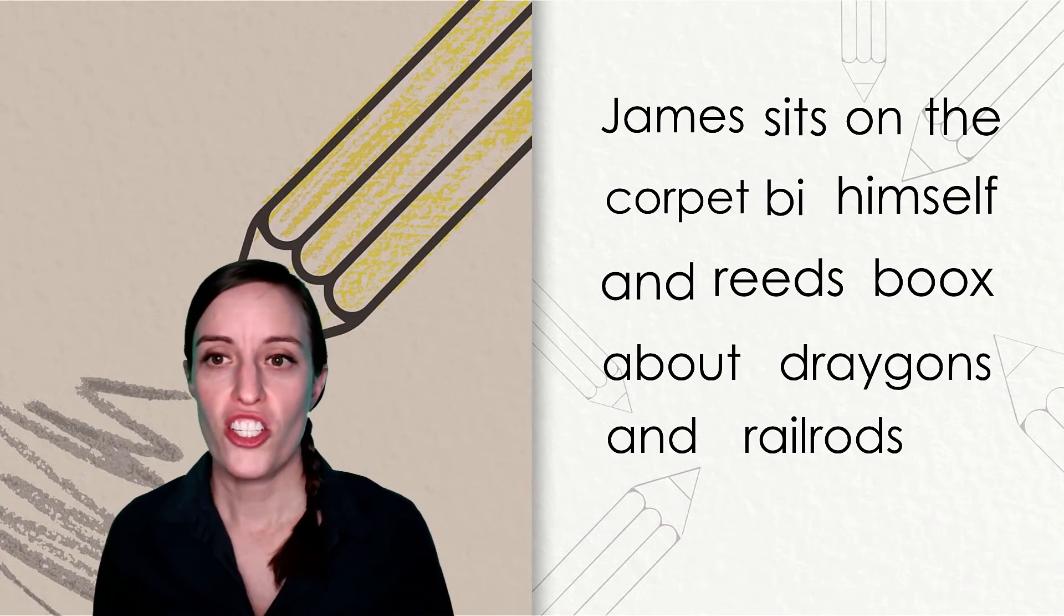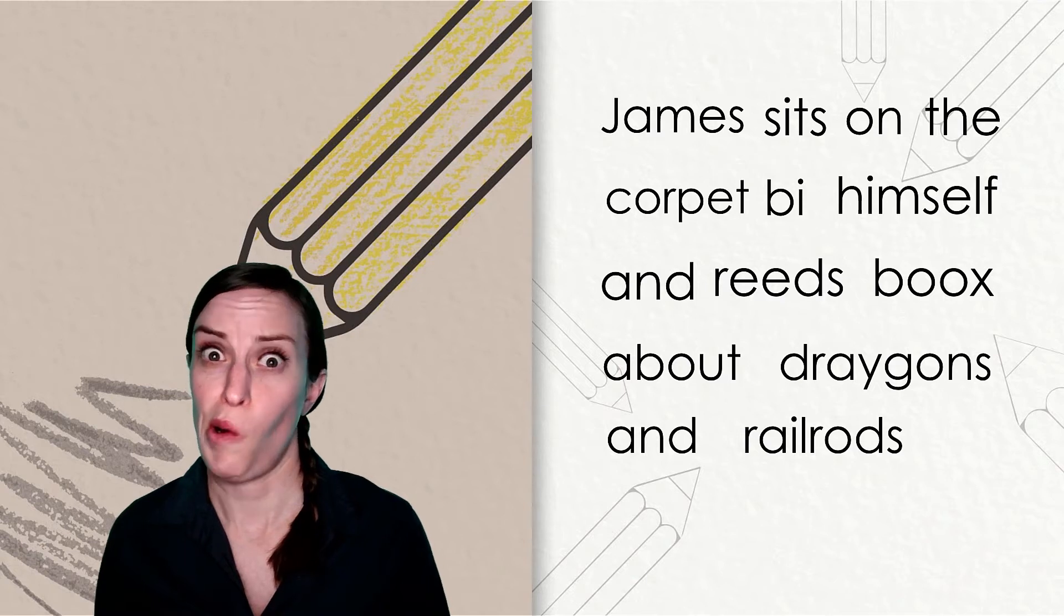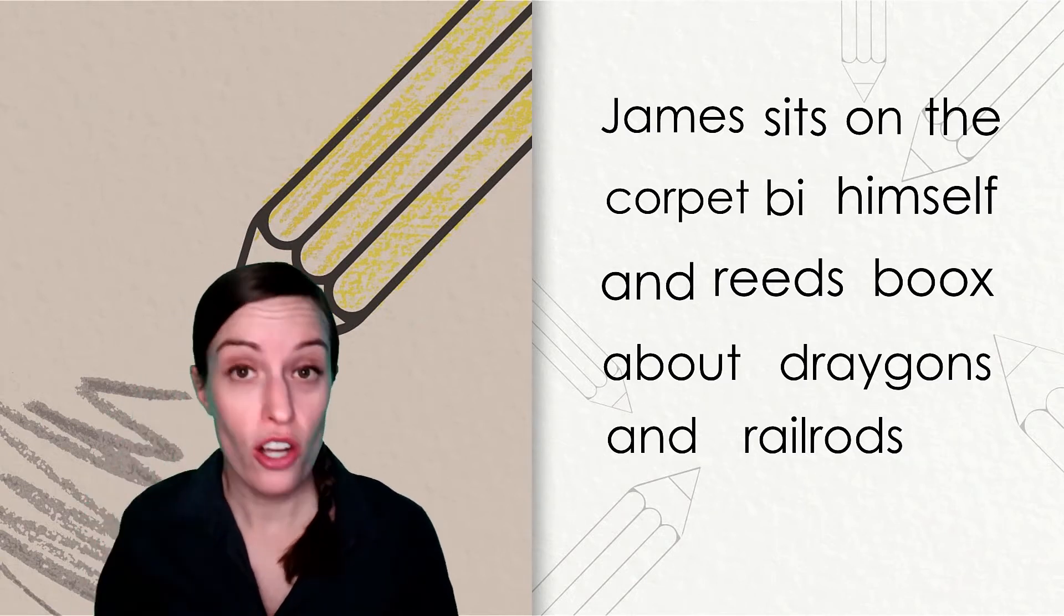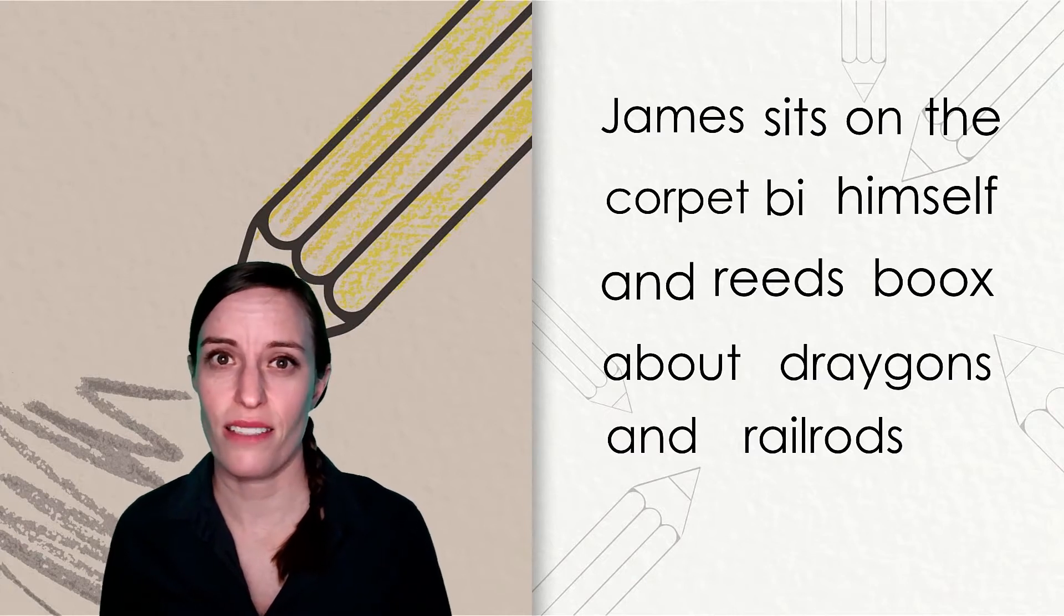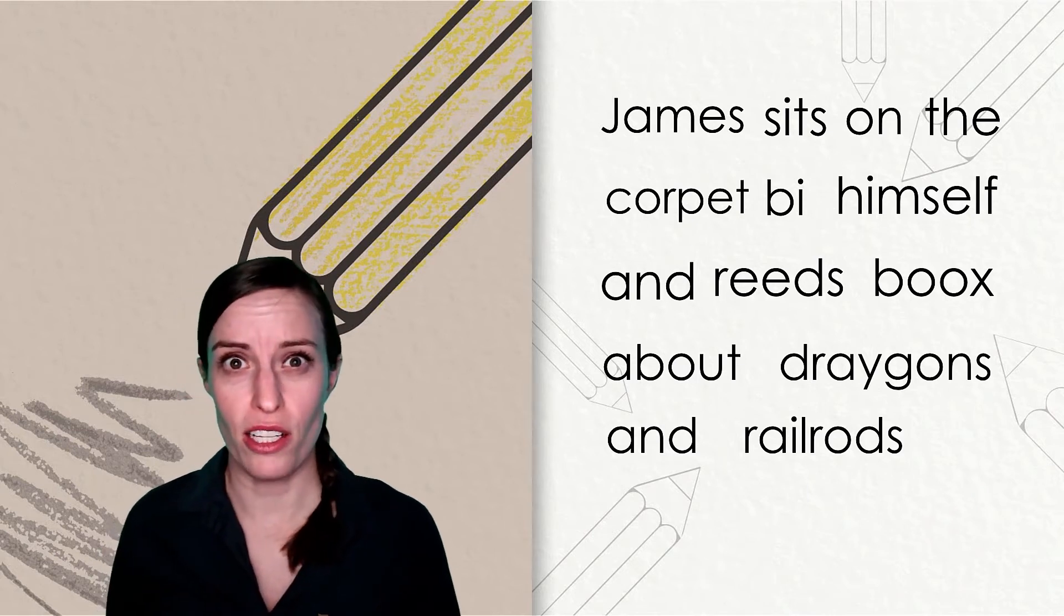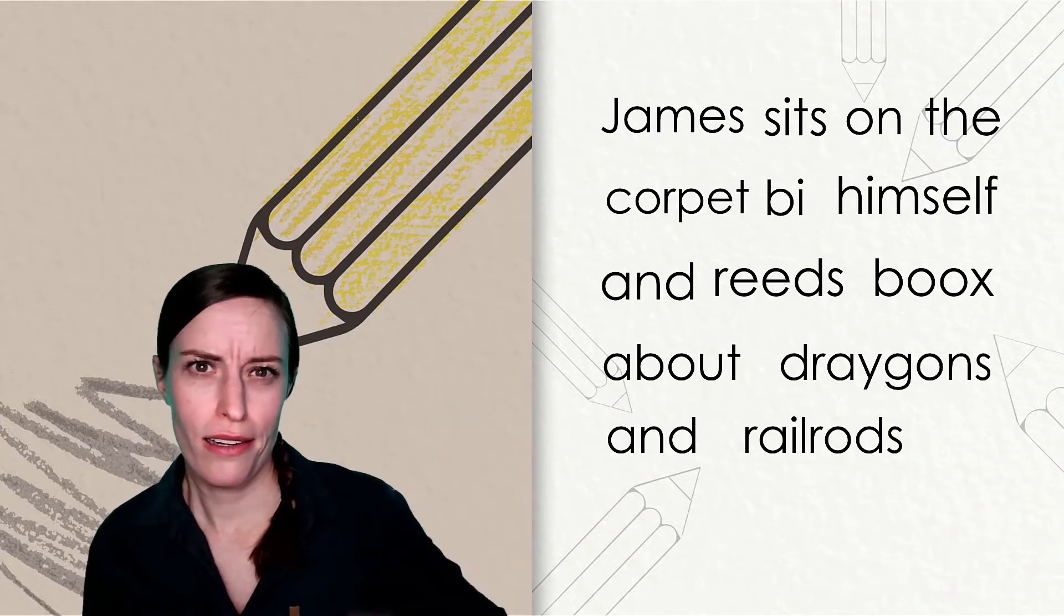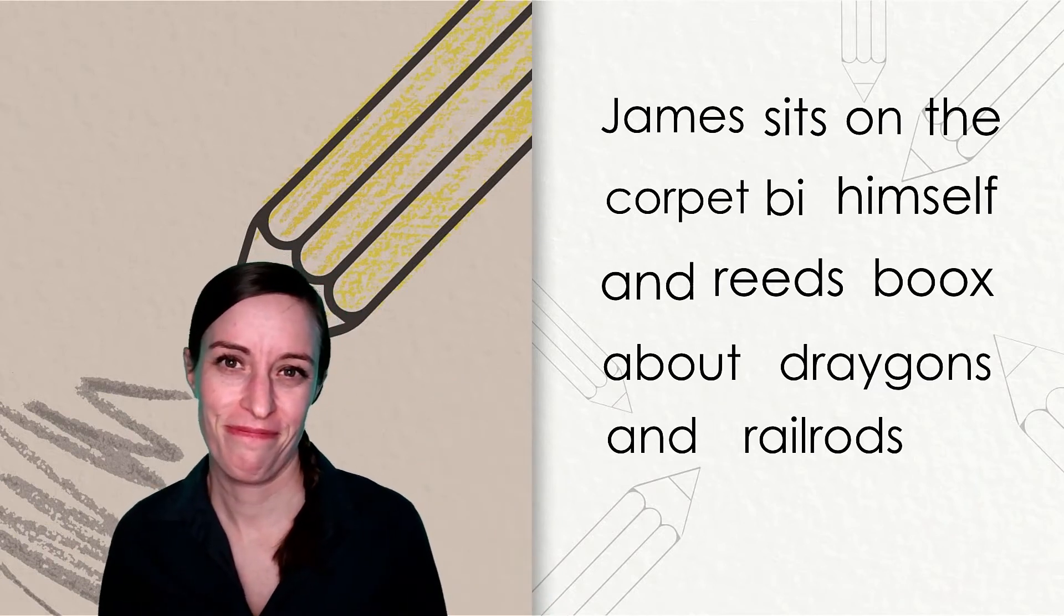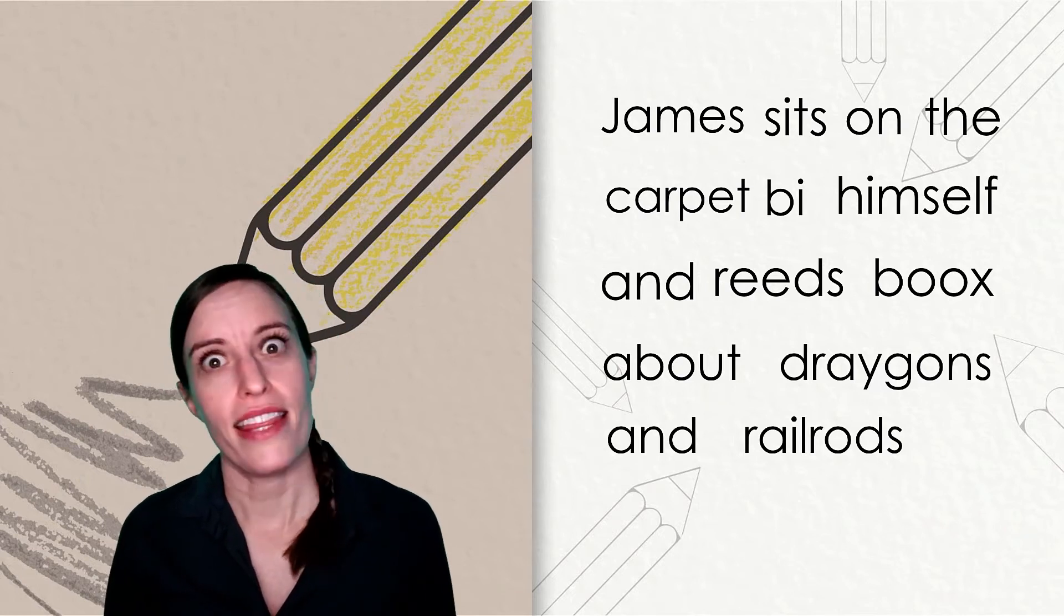Let's keep going. James sits on the corpette. Corpette? What's a corpette? Oh, carpet? That sounds right and it makes sense with this sentence. Carpet. It sounds like the first syllable of carpet has the r-controlled vowel ar. Do you remember what two letters make that sound? That looks better.